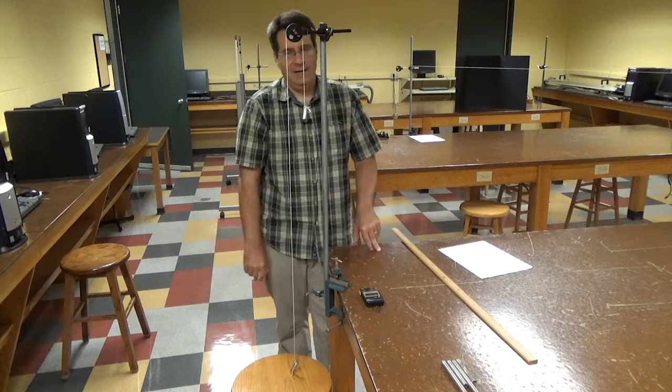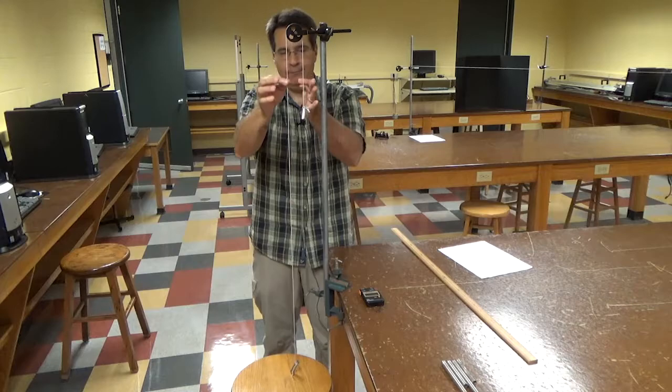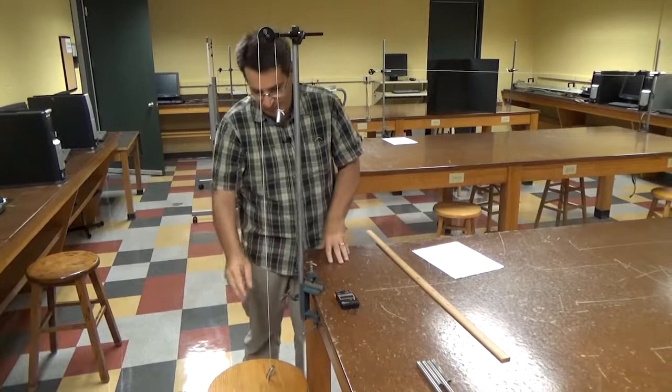Okay guys, so here is the Atwood machine. It utilizes one of the simple machines, just a pulley with a string, and we have two weights on either end of the string.